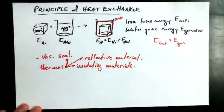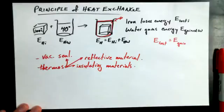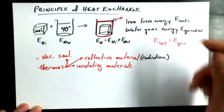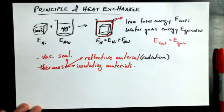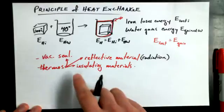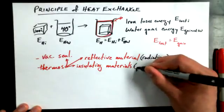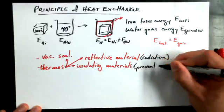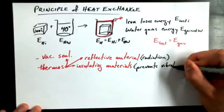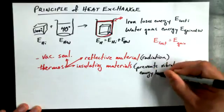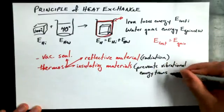The nice thing about a reflective material is what type of energy does it prevent the escape of? It starts with an R - radiation. It takes care of radiation because thermal energy can be radiated as infrared energy beyond our visible spectrum. What about the insulating material? It actually prevents vibrational energy transfers. That's one of the best types of insulating material properties.